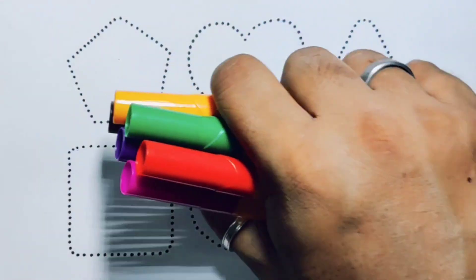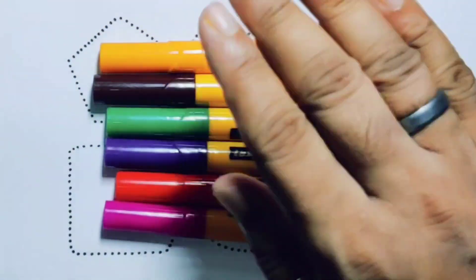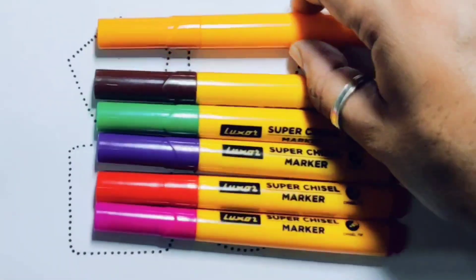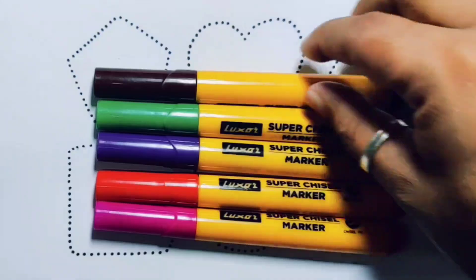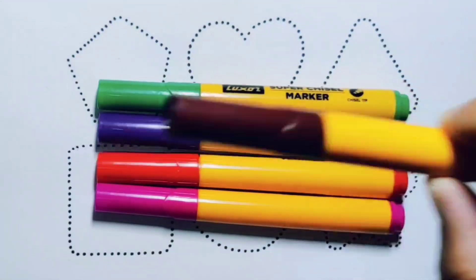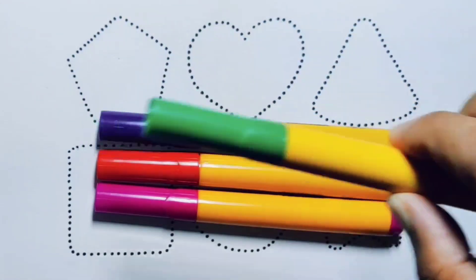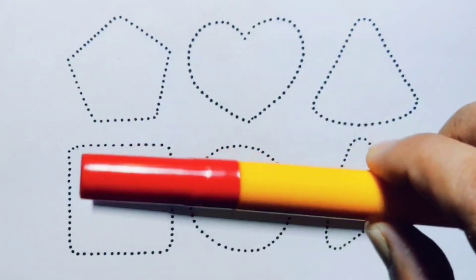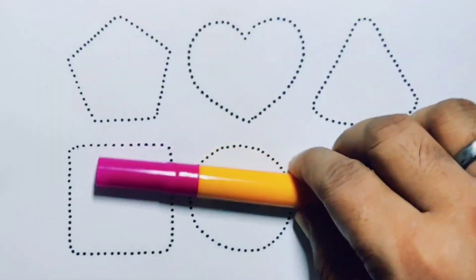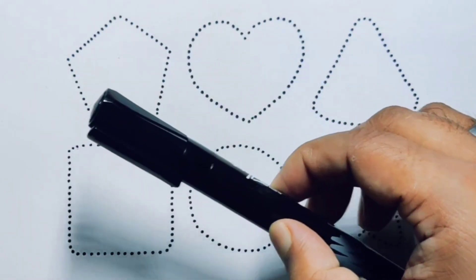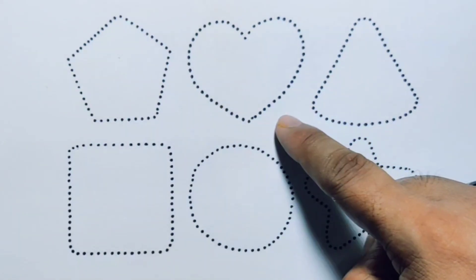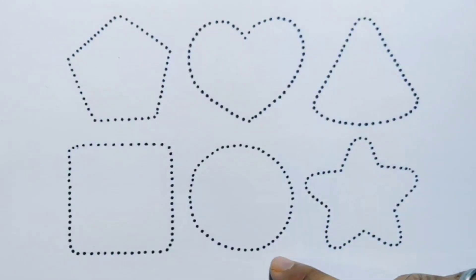Hello kids, welcome to my new video. First we're going to know the color names: orange color, chocolate color, green color, purple color, red color, pink color, black color. Now let's learn the 2D shapes: pentagon, heart, triangle, square, circle, and star.